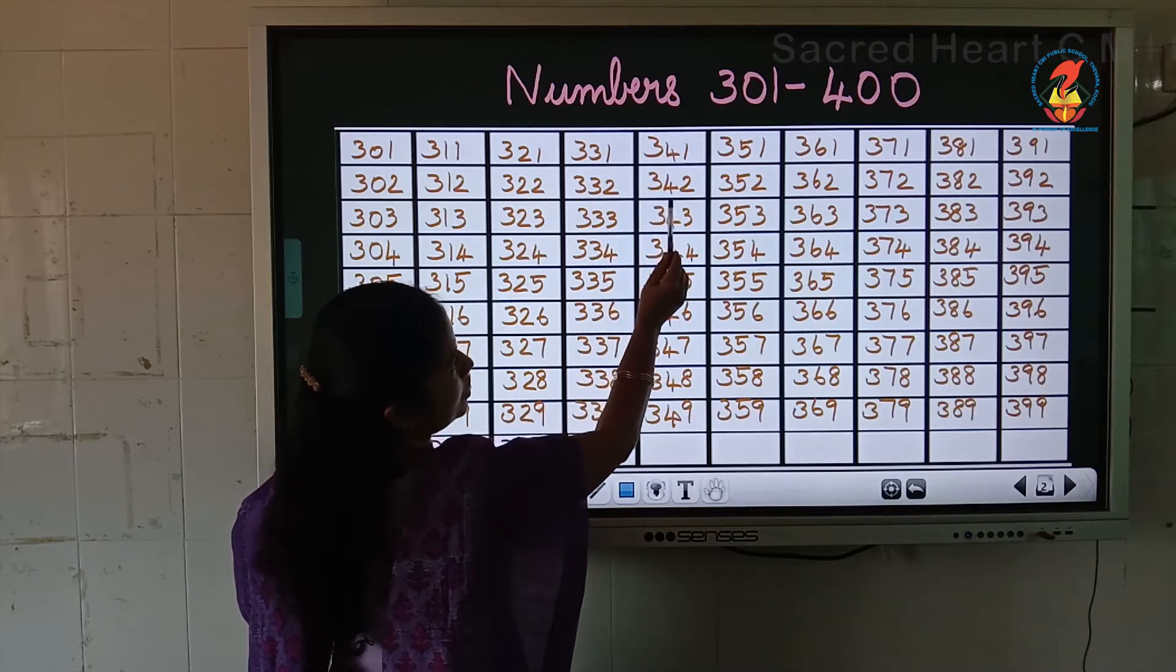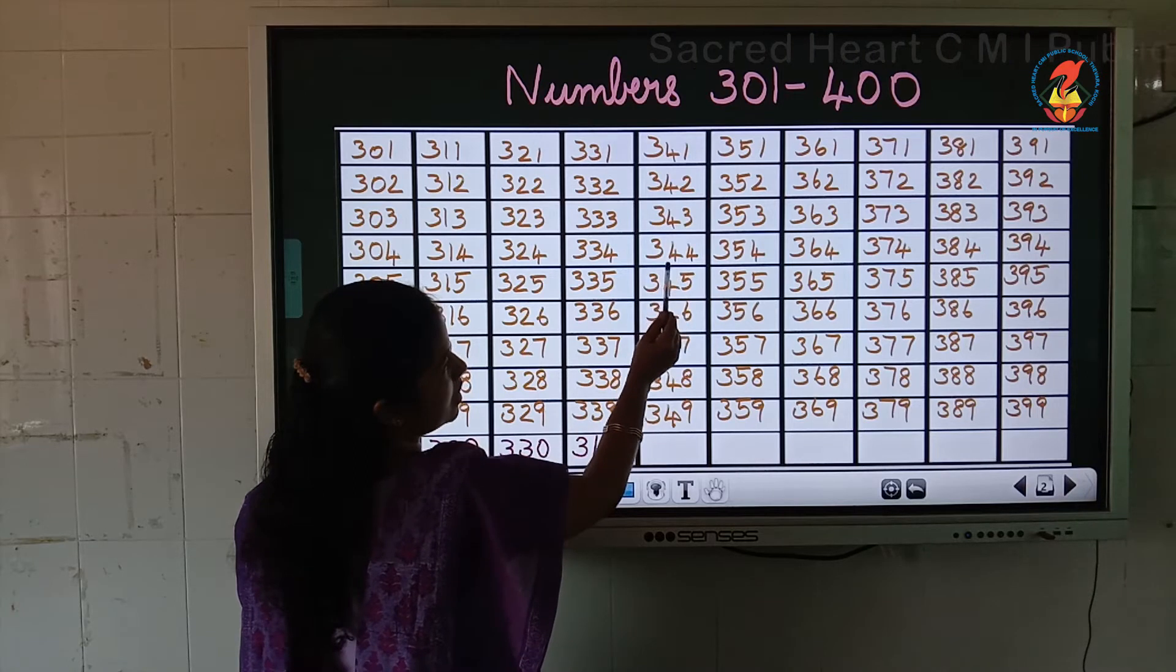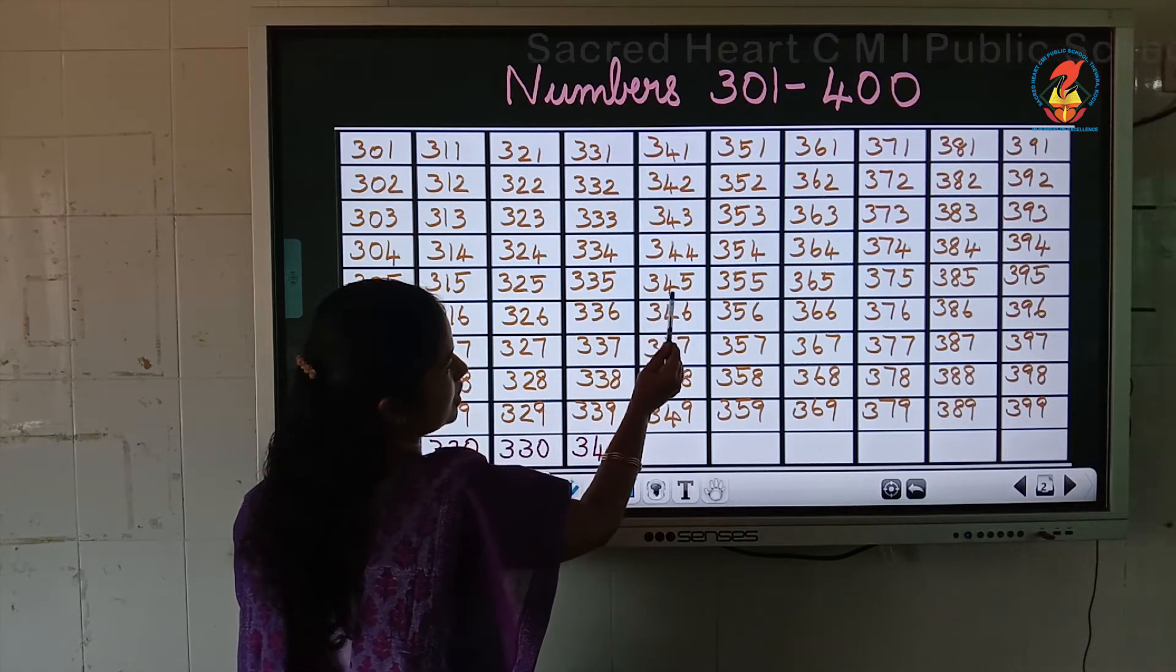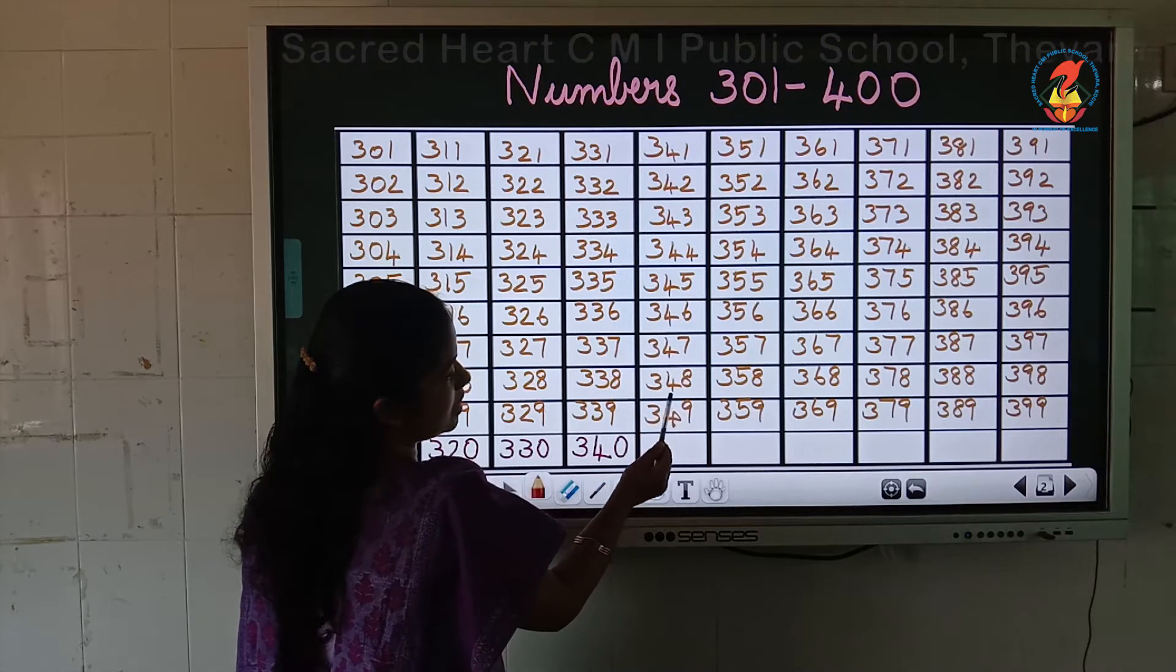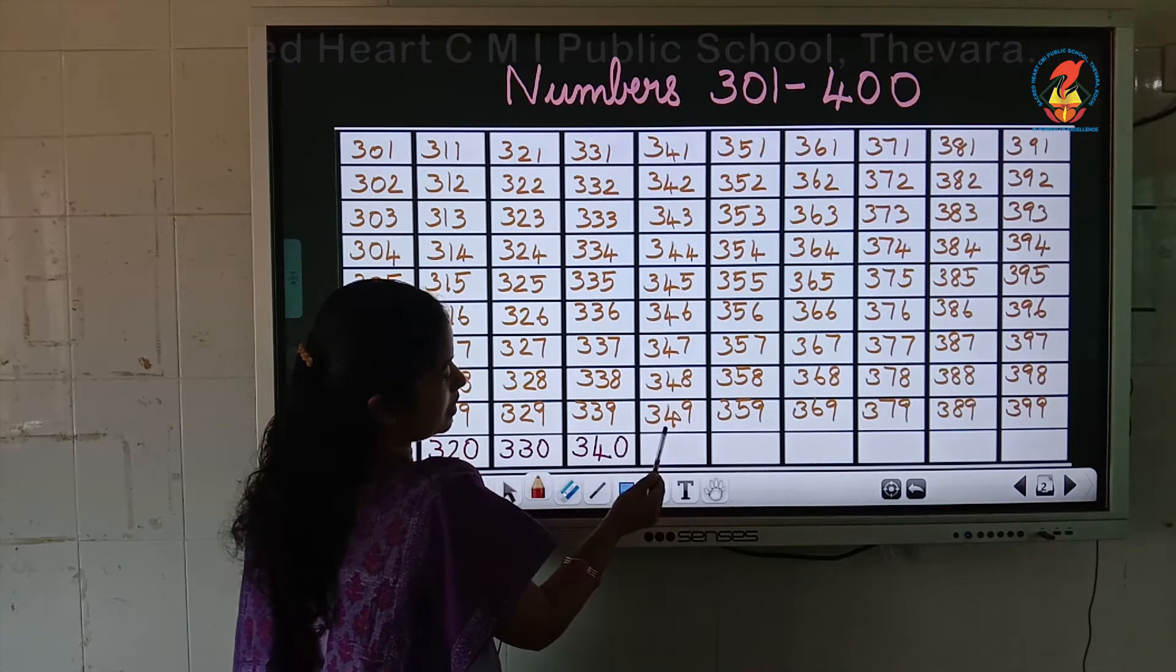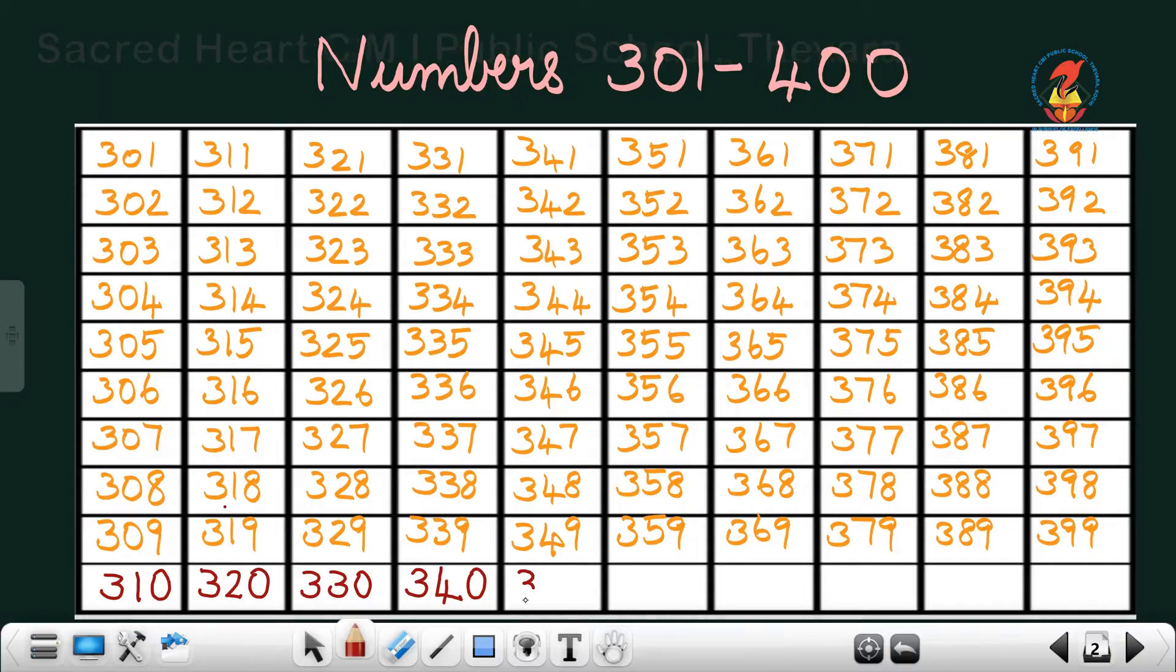341, 342, 343, 344, 345, 346, 347, 348, 349, then comes 350.